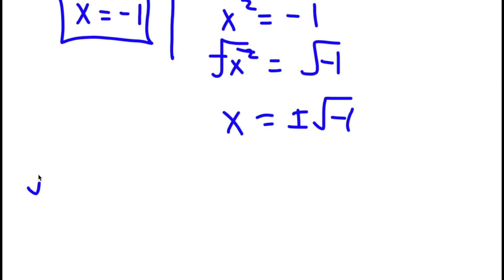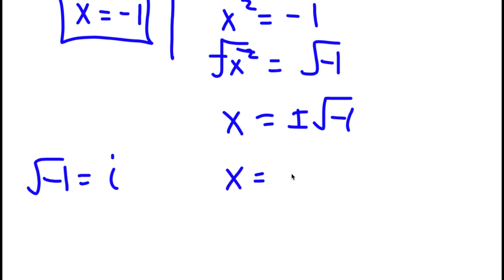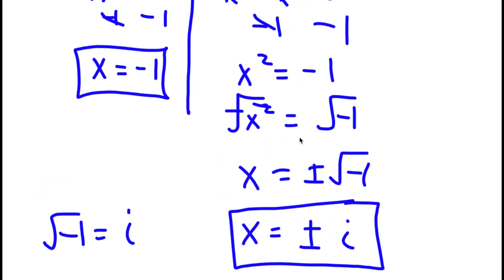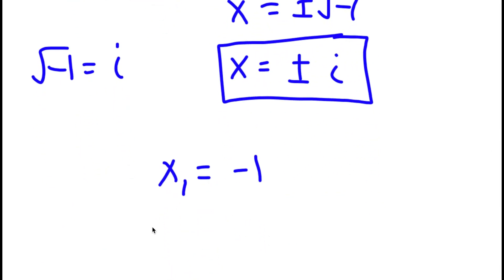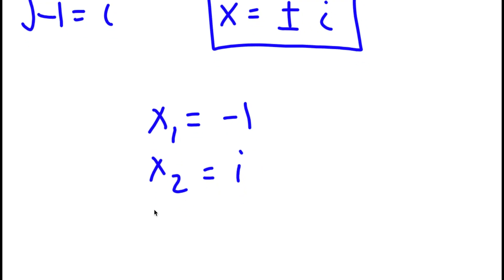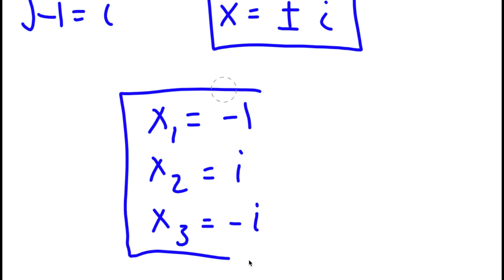If you didn't already know, the square root of negative 1 is actually equal to i. So if I replace the square root of negative 1 with i, I get x = +i or -i. So my three solutions to this problem are negative 1, i, and negative i.